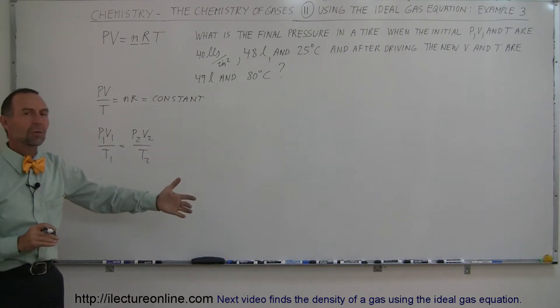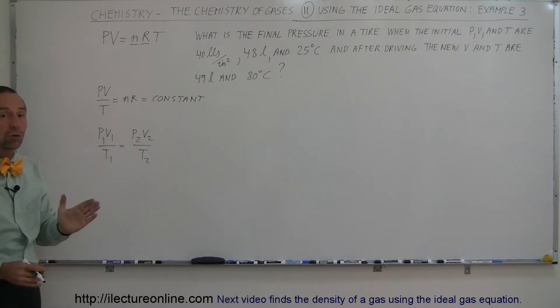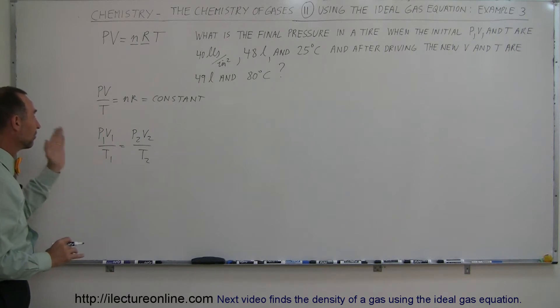So if you forget what Boyle's law was, don't worry about it, just go ahead and pull out your ideal gas equation, determine what's constant, determine what's not, move everything that's constant to the right, everything that's not constant to the left, and then set those two ratios equal to each other.